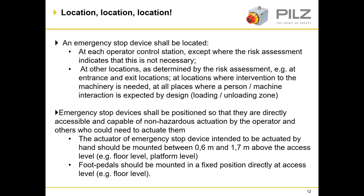The actuator of an emergency stop device intended to be actuated by hand should be mounted between 0.6 metres and 1.7 metres above the access level — for example the floor level or a platform level. Foot pedals should be mounted in a fixed position directly at access level. The positioning of emergency stops shouldn't introduce further hazards by potentially having to reach over other hazards to reach them, and foot pedals should be fixed to the floor to stop them moving around and potentially creating tripping hazards.